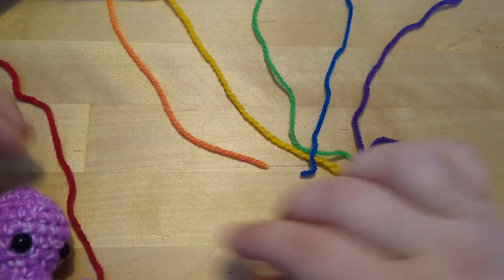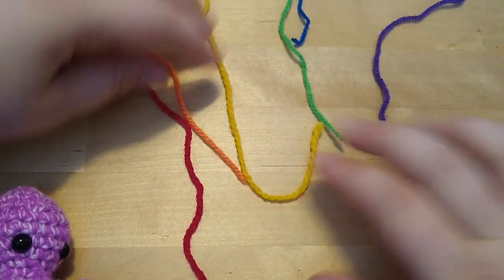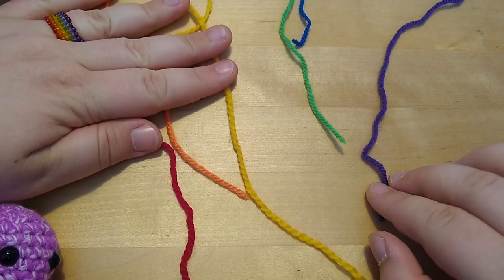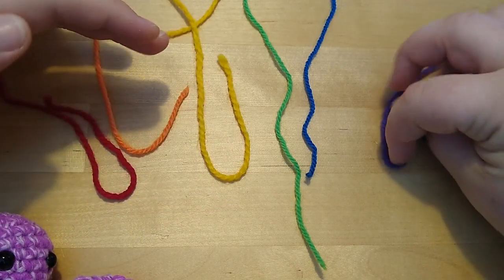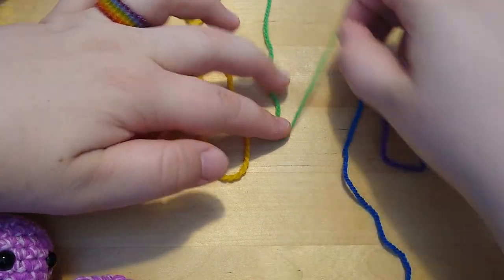So back to the octopus, I found all the rainbow colors in my yarn stash, but they are all different thicknesses. It should work out though, if I double up these four colors and triple up my green and blue.